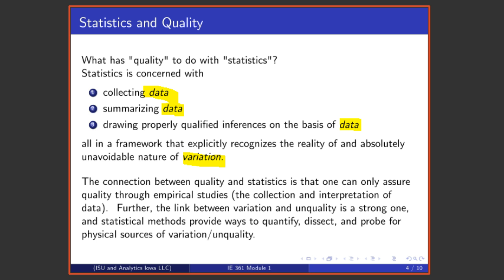The connection between quality and statistics is that if one is going to assure quality, one must use empirical information. One must collect data, one must make measurements, and therefore one is going to do statistics. Further, there's an important link between the notion of variation, measuring it, understanding where it comes from, and hopefully getting rid of it. There's a very important link between variation and quality, and the fact that statistics is a tool in understanding variation and describing variation again makes it essential for our fundamental goal of statistical quality assurance and statistical process improvement.